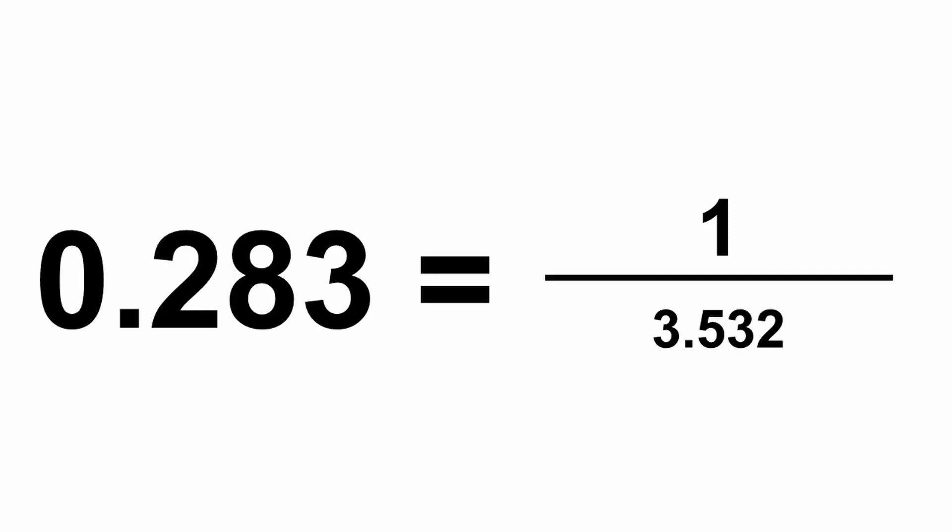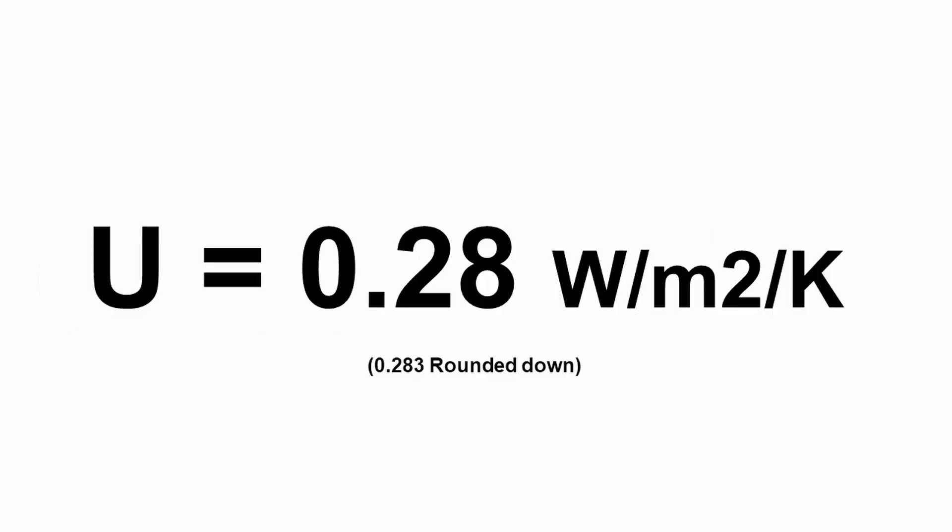So the resulting calculation works out to 0.283. Now, when we're looking at a U-value calculation, we would round that to two significant digits. So if the number is above 1, it would be a whole number and a decimal place. If it's below 1, then it's two decimal places. So we would be rounding this to two numbers. And numbers 1 to 4 get rounded down, 5 to 9 get rounded up. So when we round this, it goes down to 0.28.